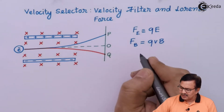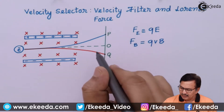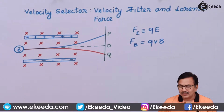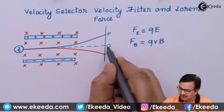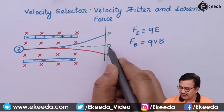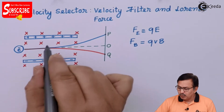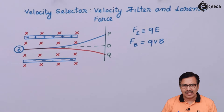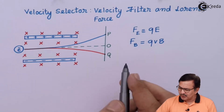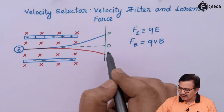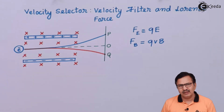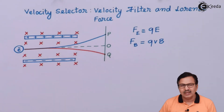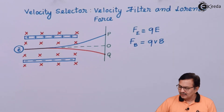The deflection produced by the electric field is OP and the deflection produced exclusively by the magnetic field is OQ. If both these forces are balanced, then in that situation OP and OQ will actually be equal, and this means that the electron will pass through undeflected.